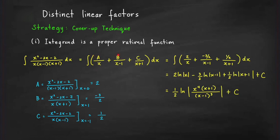To find constant b, cover the x minus 1 in the integrand. Evaluate the resulting expression at the x that makes that linear factor equal to 0, which is x equals 1. Plugging in x equals 1, we get 1 squared minus 2 minus 2, giving negative 3 over 1 times 2, which is negative 3 over 2. So b equals negative 3 halves.